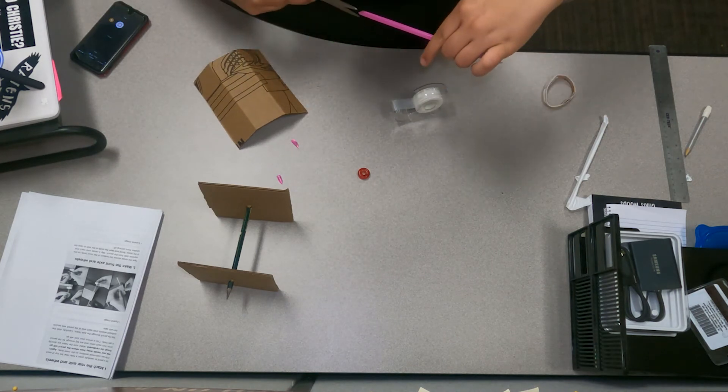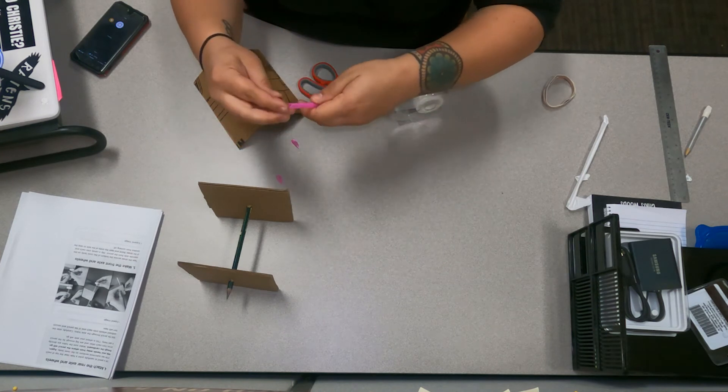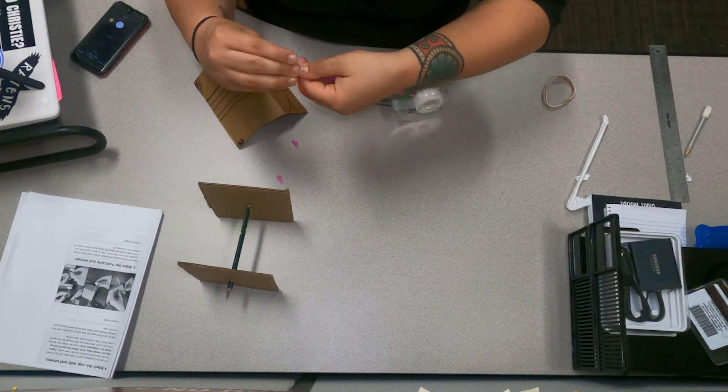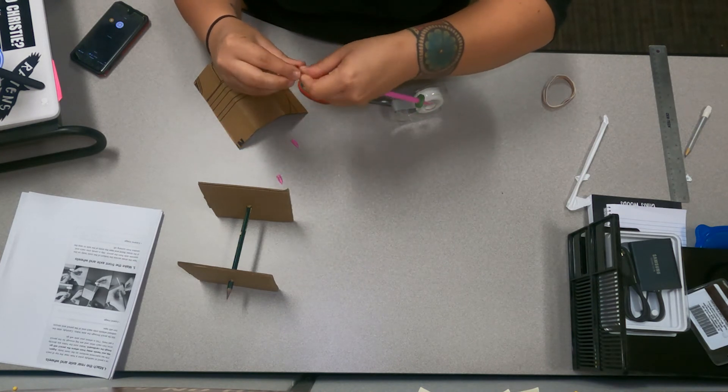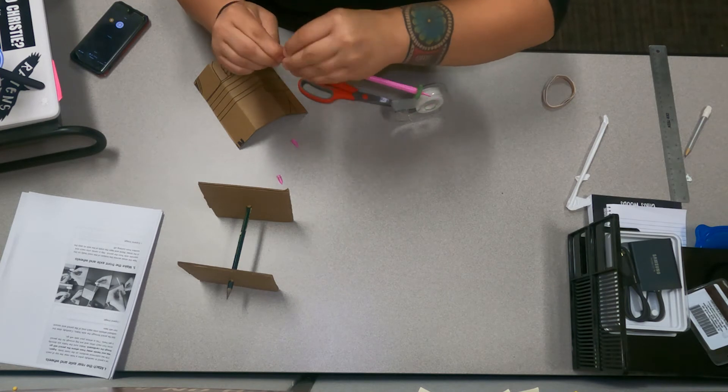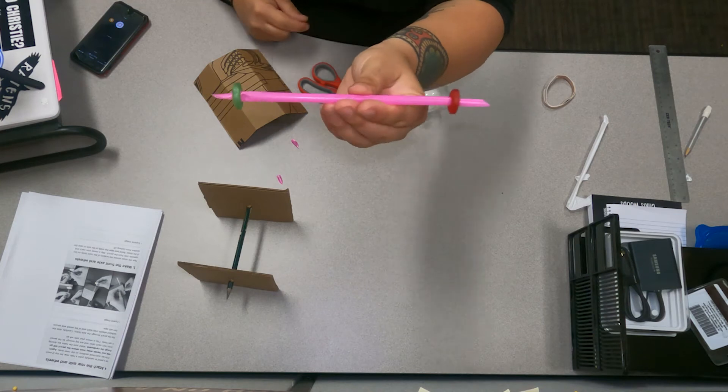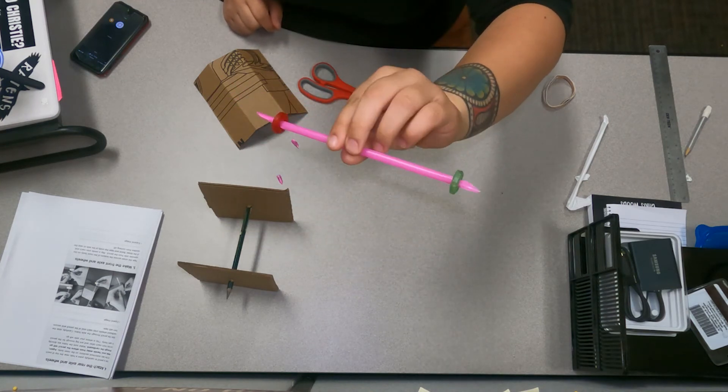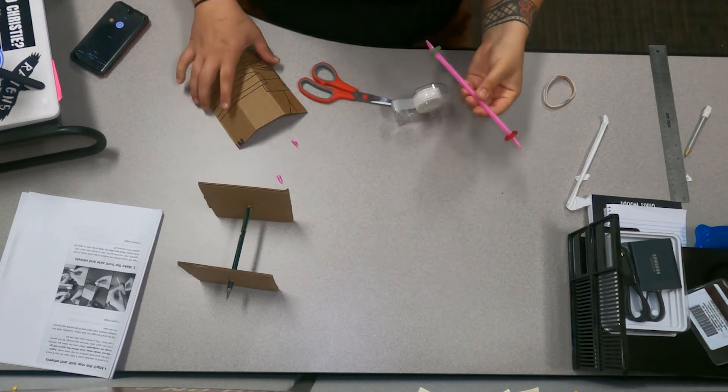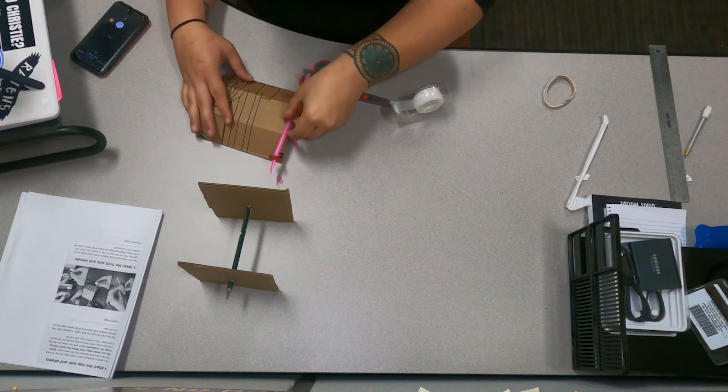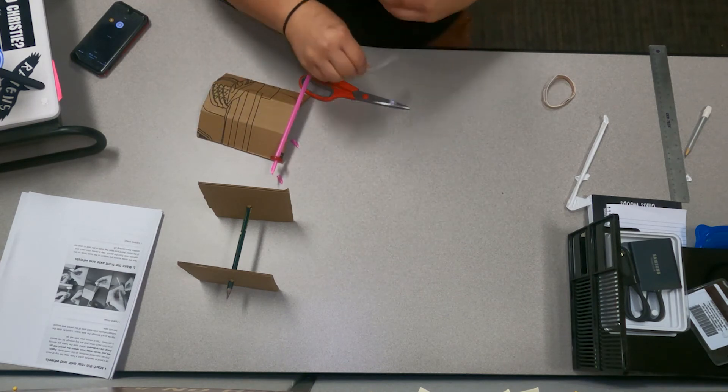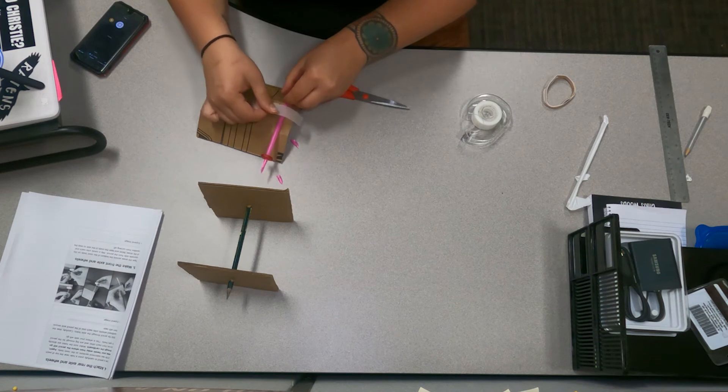So we got one on there as you can see. We're gonna do the same thing to the other side for the second piece of candy. Got both on just like that, a couple of wheels on axle. So let's tape it to the body just with a couple pieces of tape. It should be good to go.